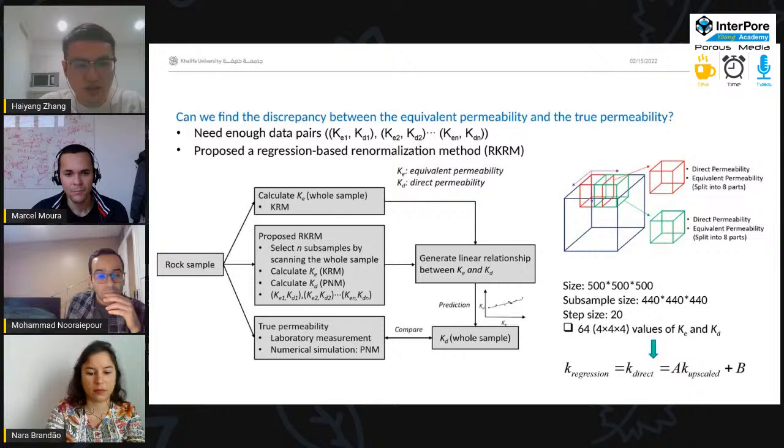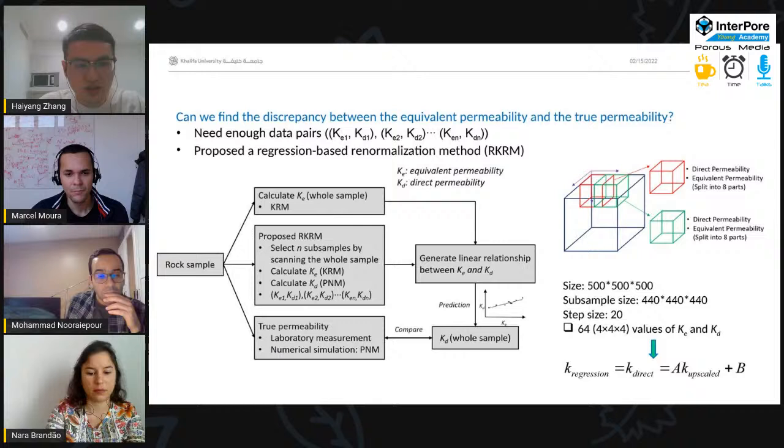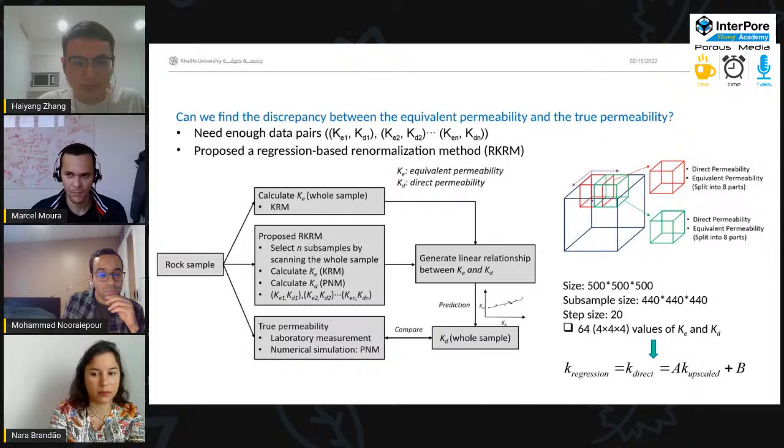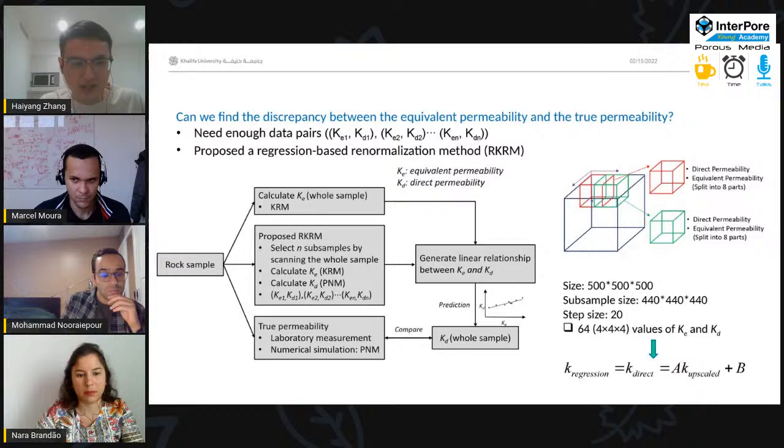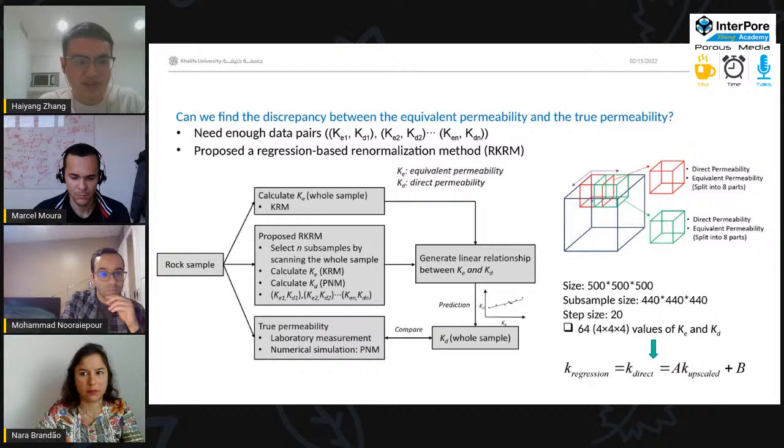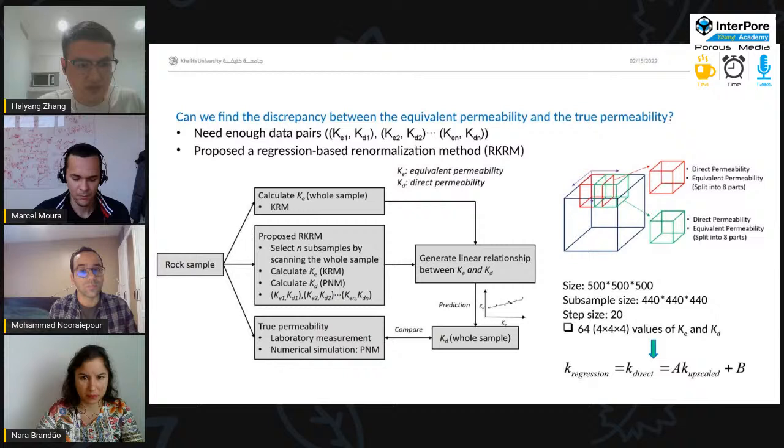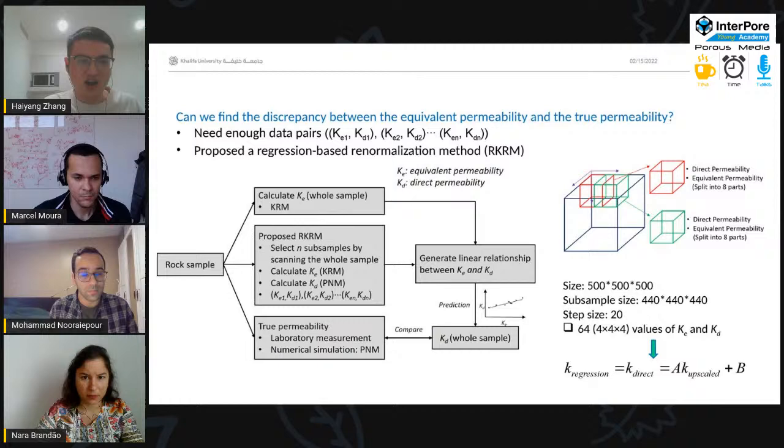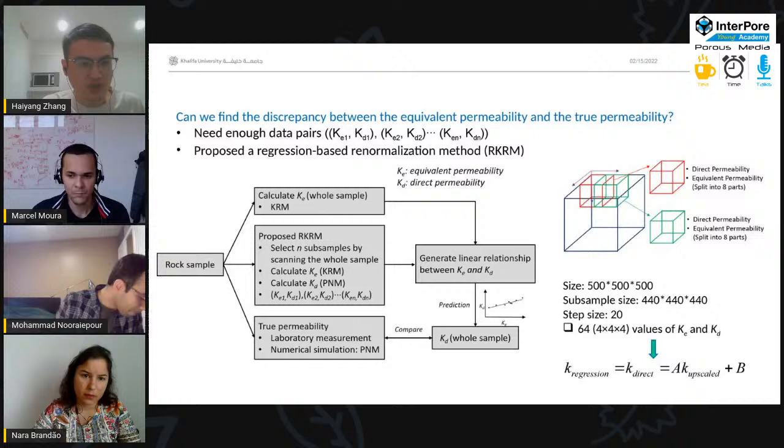Here's the workflow. So, we firstly calculate the equivalent permeability using the KRM. And we select the subsample and calculate the equivalent permeability and the direct permeability, like the red cube. And then we slide to a new position and select the second subsample, like the green cube. And we calculate the same data. So, the whole sample will be scanned and covered in three directions. And several data points will be obtained, like KE1 to KD1.